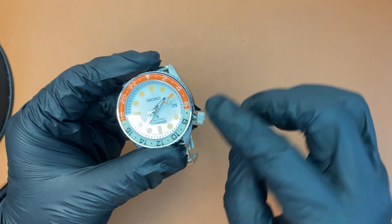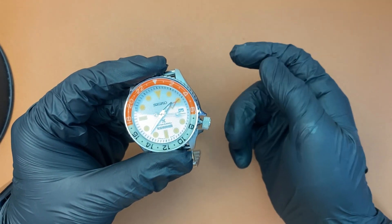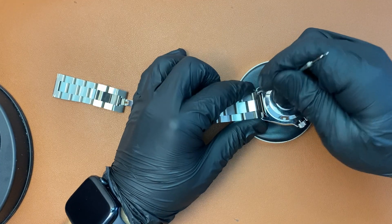But the problem is when I pull it into the second position, there's literally no tension, so I'm not able to change the date and the GMT hands. This is where the problem lies. Let's remove the bracelet.